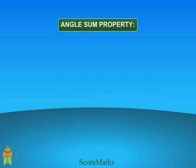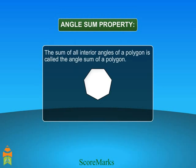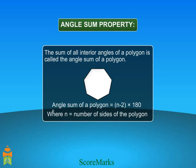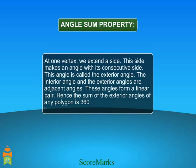Angle Sum Property: the sum of all interior angles of a polygon is called the Angle Sum of a Polygon. This is the formula to find the Angle Sum of a Polygon. The sum of the exterior angles of any polygon is 360 degrees.